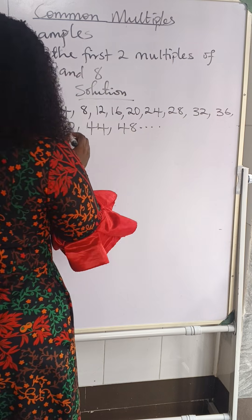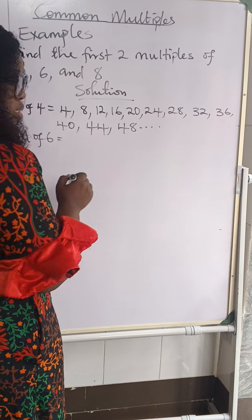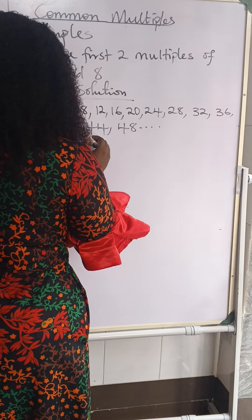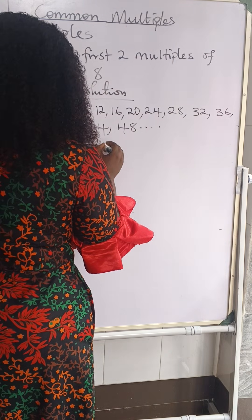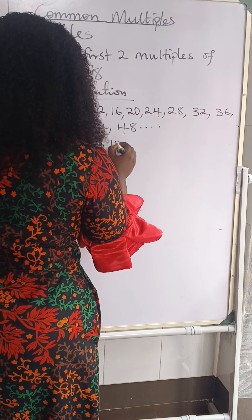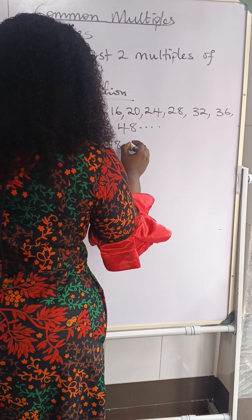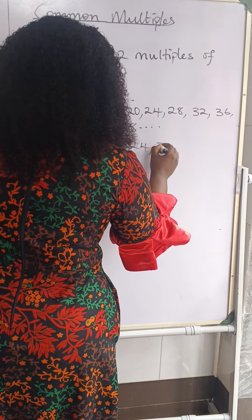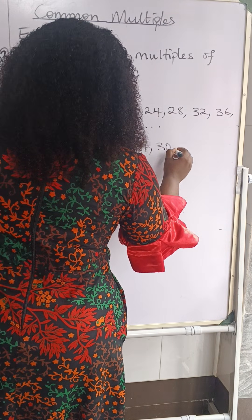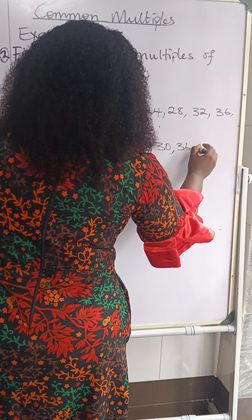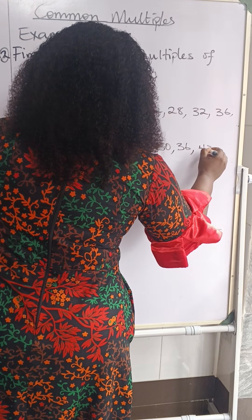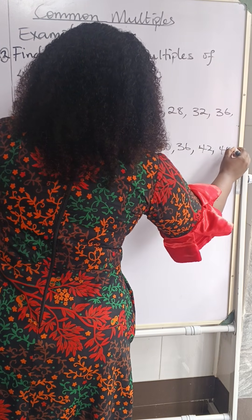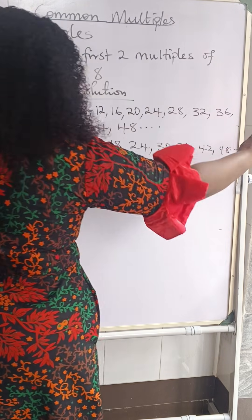Now let's go to the multiples of six. Multiples of six — counting in sixes: six, twelve, eighteen, twenty-four, thirty, thirty-six, forty-two, forty-eight, and so on.